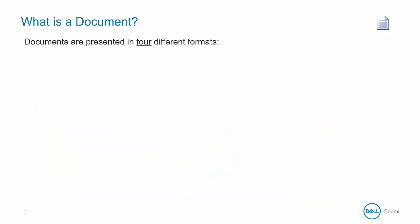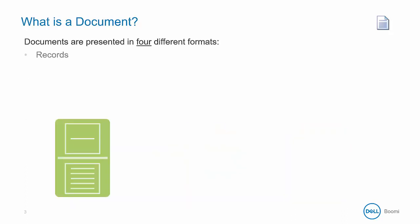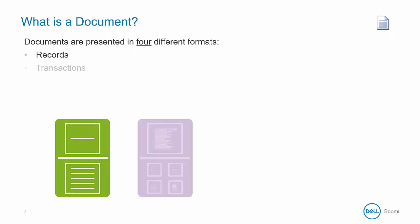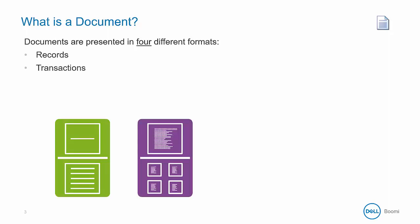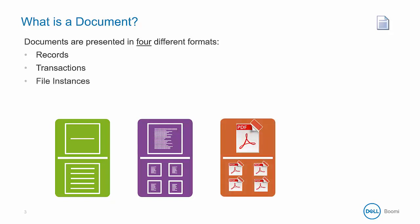Documents are presented in four different formats. There are records for flat files and database record sets, and transactions for XML and EDI. File instances are for any kind of communication between systems that don't require a structure analysis — for example, an email attachment, an image, or export to disk. There is also an empty document for simply triggering subsequent shapes in a process.